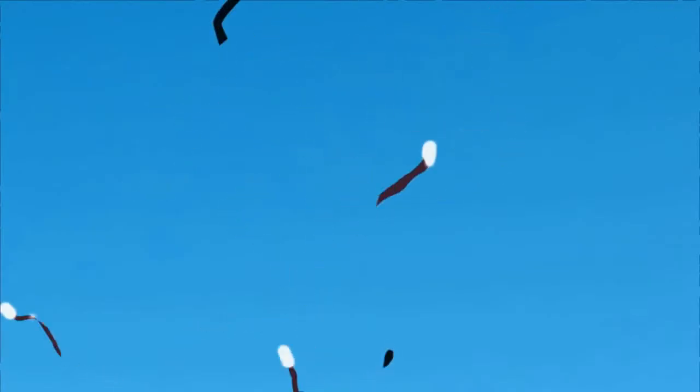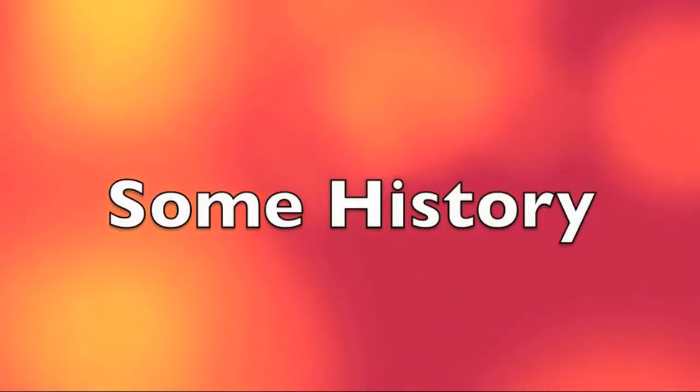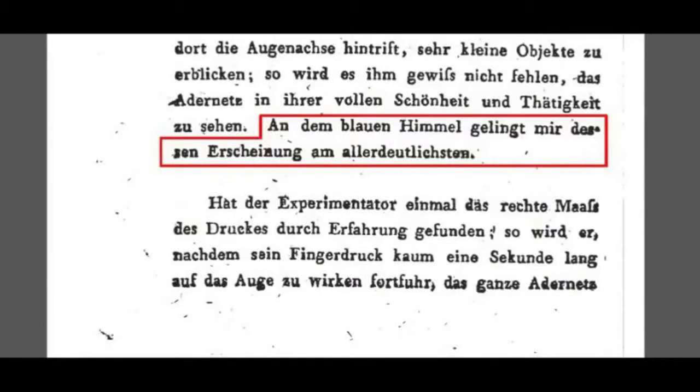Some science museums have exhibits which consist of a screen of blue light, allowing you to see these blue sky sprites much more clearly than you normally would. Although it had been written about previously, the first person who unambiguously described and investigated blue field entoptic phenomenon was the German doctor Johann Steinbuch in 1813. Steinbuch had seen the blood flowing in capillaries in the webbed skin of frogs through a microscope. So when he saw specks of light moving about while looking at a sunlit white wall, he surmised that it was the blood moving through the capillaries on his own retina. He wrote that he also saw the phenomenon while looking at the blue sky.